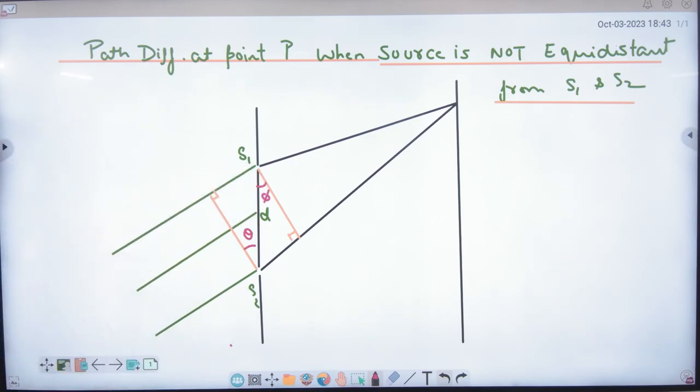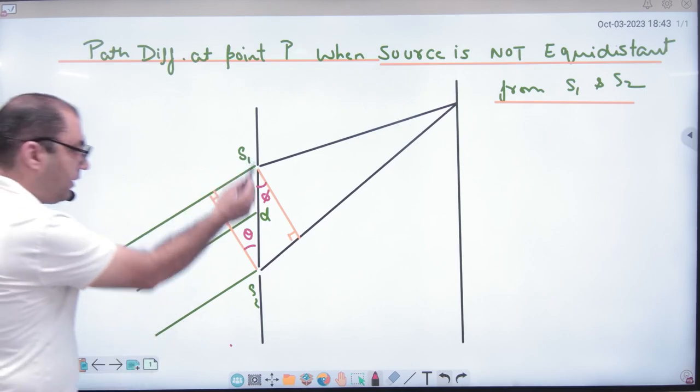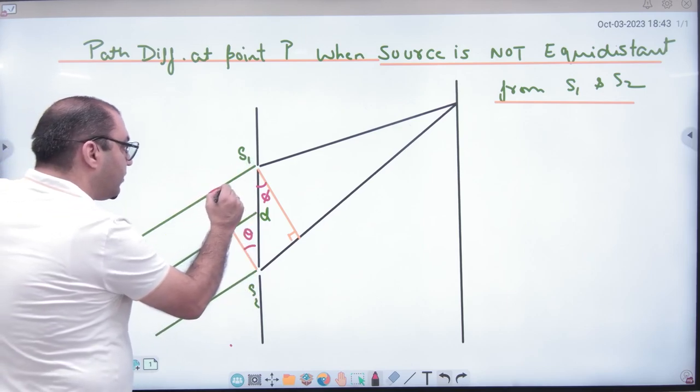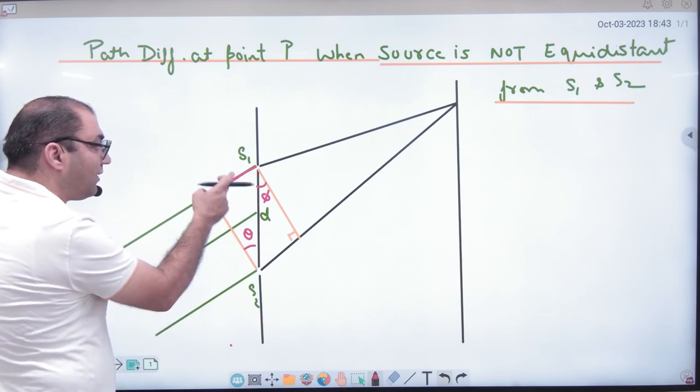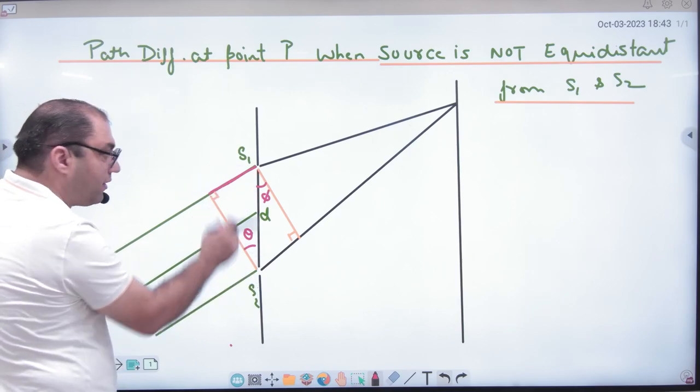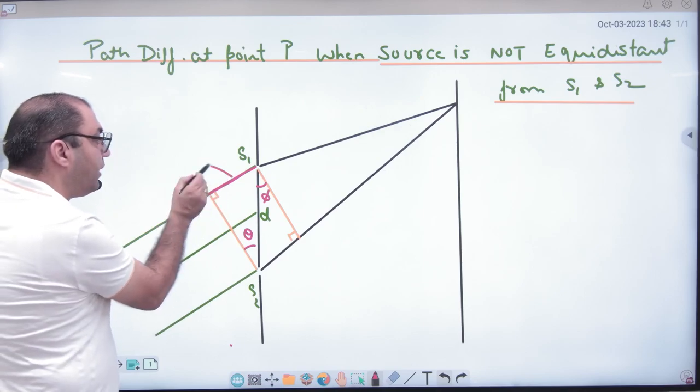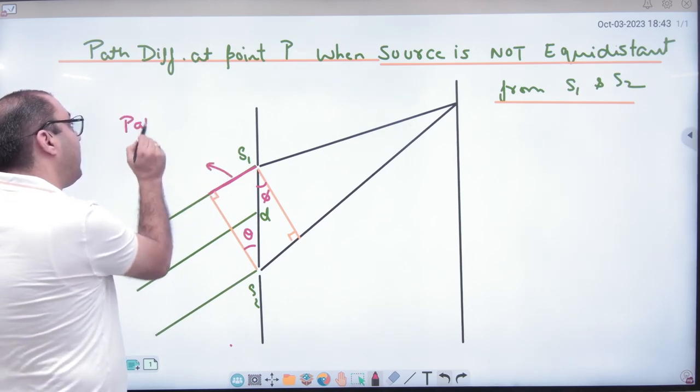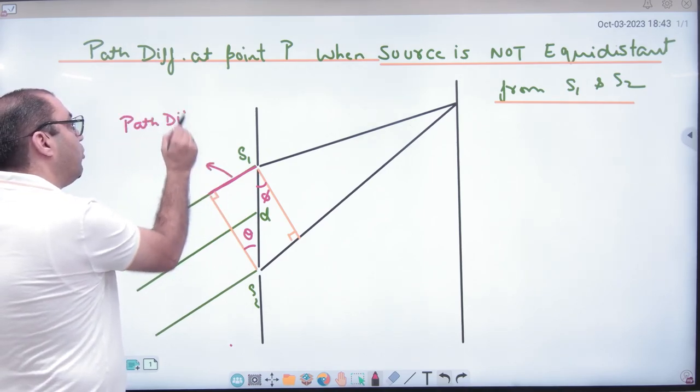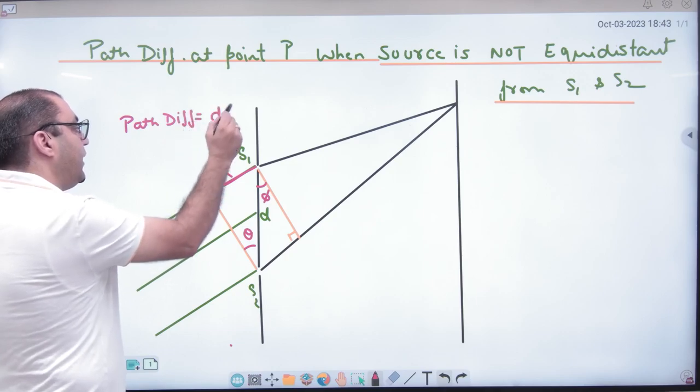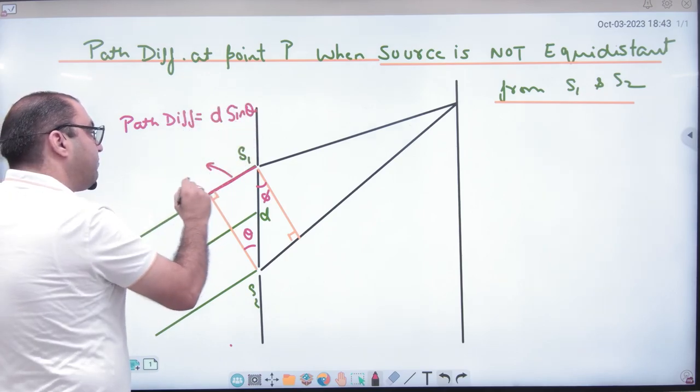So if it is D, this distance, this wave, the upper one has covered more than the lower. Which way? So this side, what will come to this side?